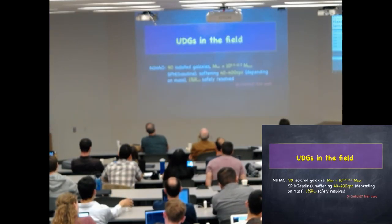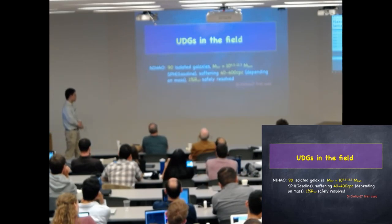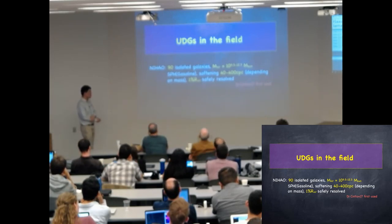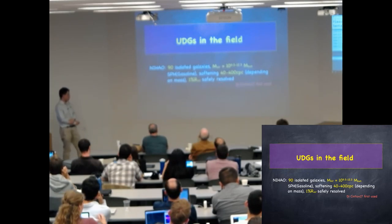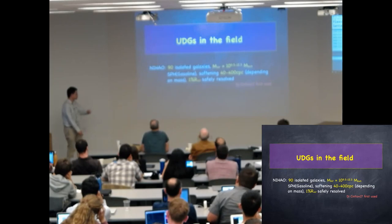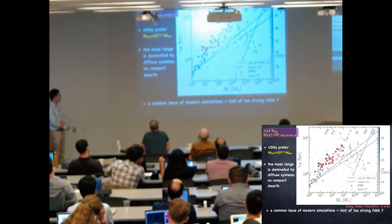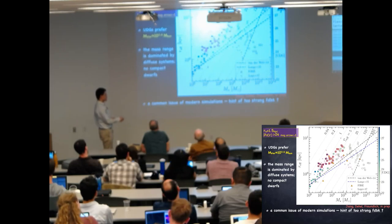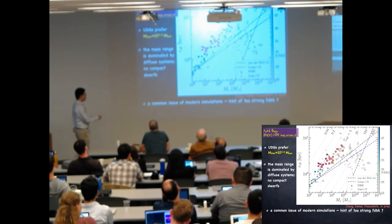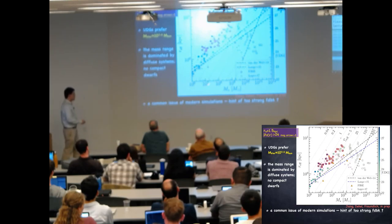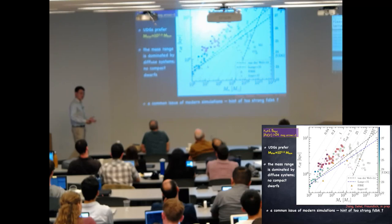The NIHAO sample consists of 90 isolated galaxies with virial mass in the range 10^9.5 to 10^12.3 solar masses. It is an SPH simulation with decent numerical resolution, such that for essentially all galaxies they are safely resolved down to one percent of the virial radius. Plotting the NIHAO sample on the size versus stellar mass plane, each square is color-coded by surface brightness, and galaxies meeting the UDG criteria are highlighted with red edges. UDGs prefer the mass range of 10^7 to 10^9 solar masses.